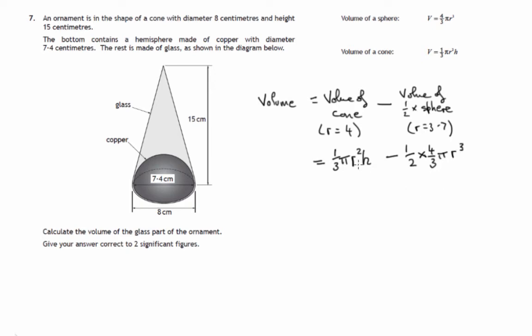Now, it's important to notice that these two quantities, the r's, are different. That's the radius of the cone. This is the radius of the sphere.